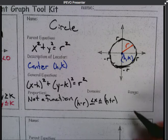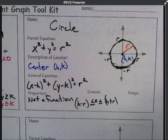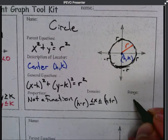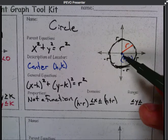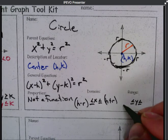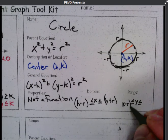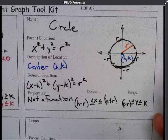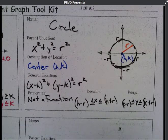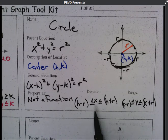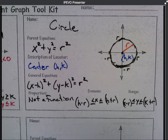Range would be similar, except you're dealing with y's and k's. And so your range is going to be less than or equal to y. And so if we go down, that is k minus r. So here is k minus r to k plus r for your values. It's easier when you look at the graph of it, but as far as our formula is concerned, you have to use the h's and the k's. So those would be the parent graph information pieces that you need to know for absolute value and for circles.